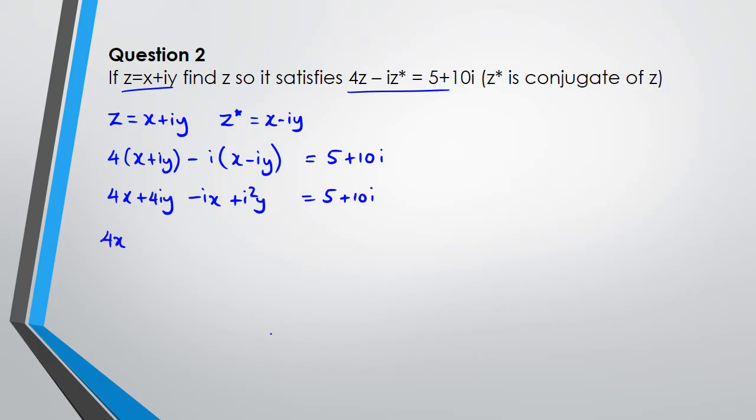So then we have i squared equals to—before I do that, let's get to this—i squared equals negative 1, so that's going to be negative y, and we've got 5 plus 10i. So looking at the real parts, the real part says 4x minus y equals 5. Looking at the imaginary parts, I've got negative ix plus 4iy equals to 10. Now because I'm doing simultaneous equations, I don't have to worry about the i's, so my two equations are going to be 4x minus y equals 5 and negative x plus 4y equals 10.